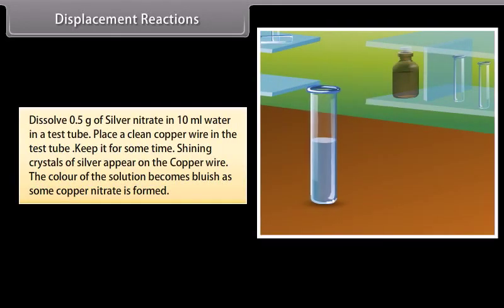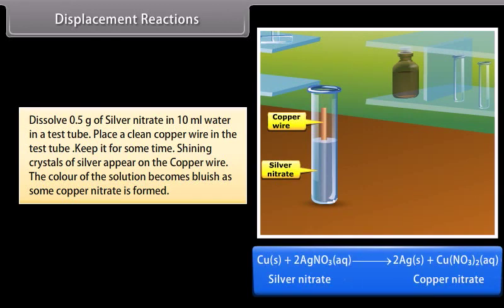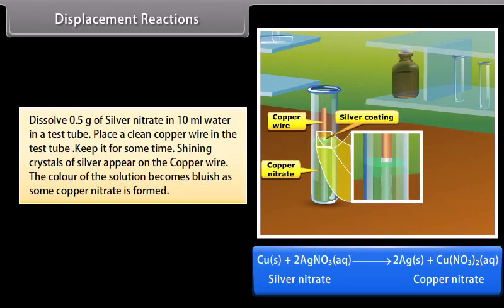Dissolve 0.5 gram of silver nitrate in 10 ml water in a test tube. Place a clean copper wire in the test tube. Keep it for some time. Shining crystals of silver appear on the copper wire. The color of the solution becomes bluish as some copper nitrate is formed.